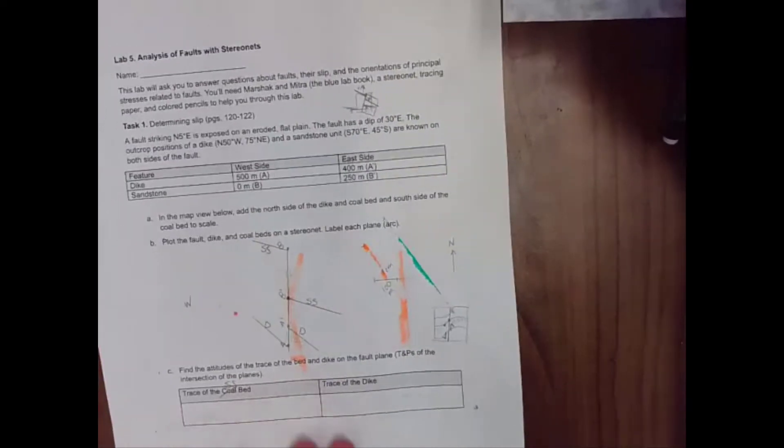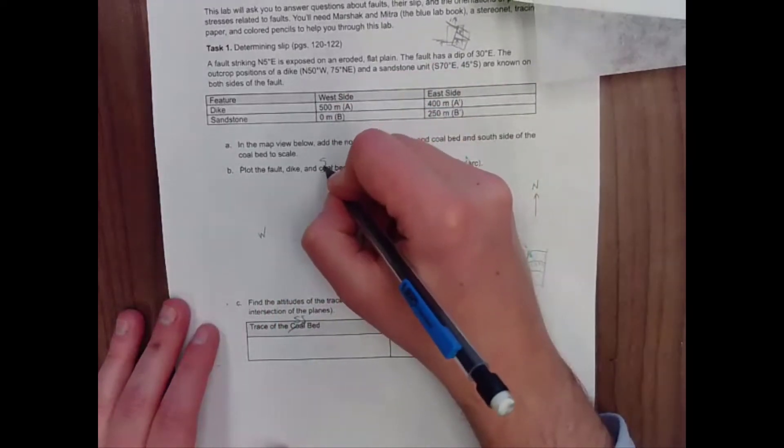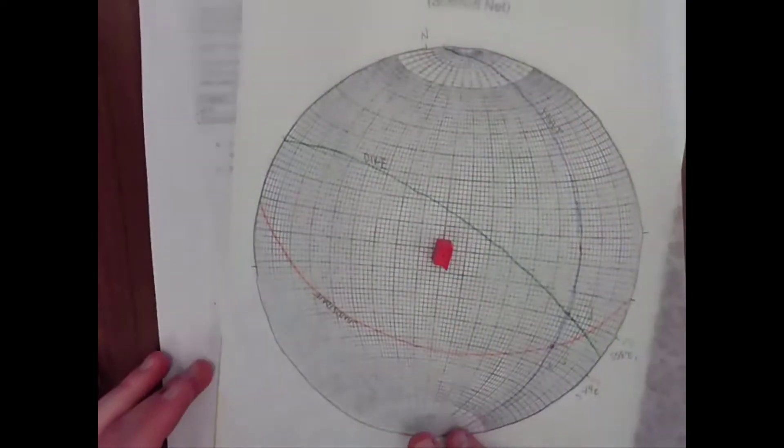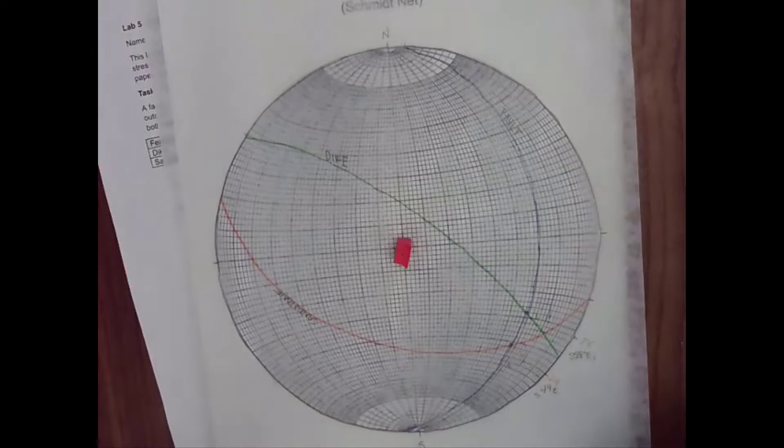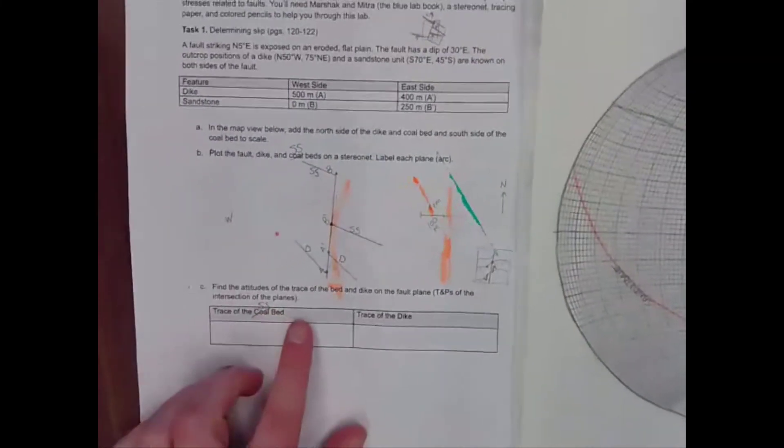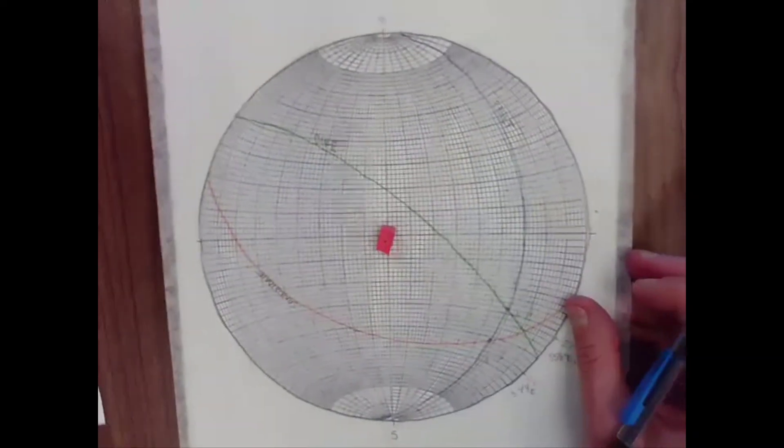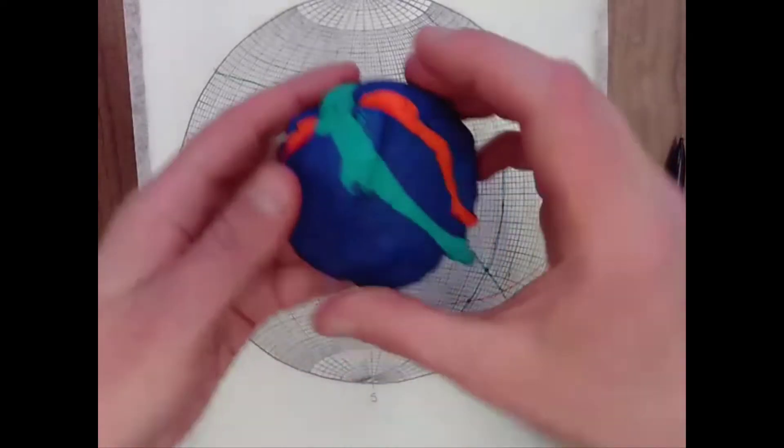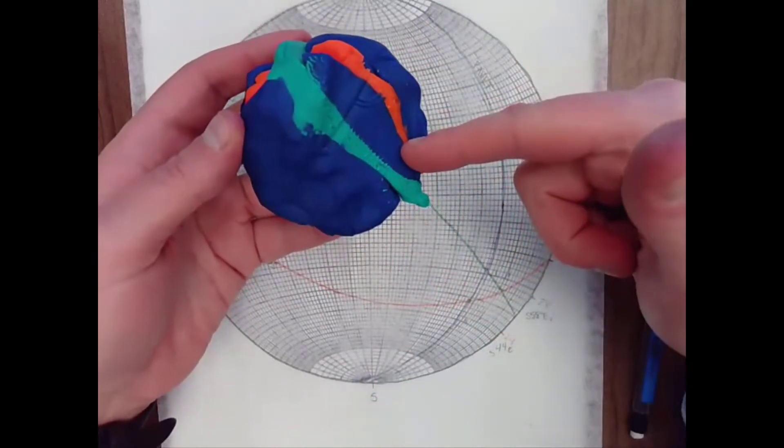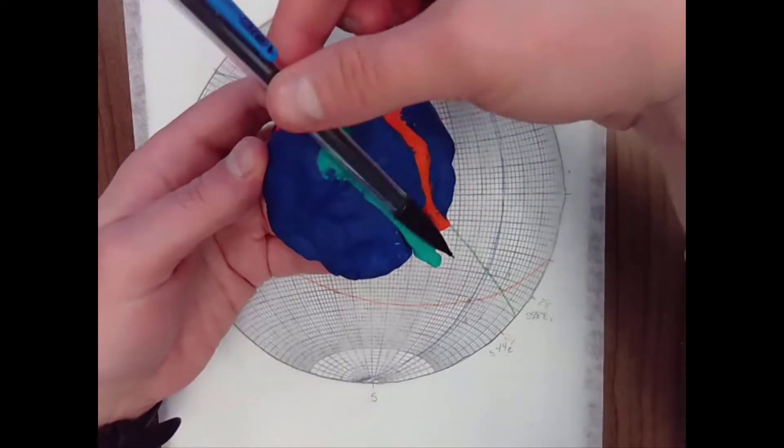To solve this problem on a stereonet, the first thing that you're going to have to do is plot the fault, the dike and the sandstone bed on the stereonet and label each one. I'm going to go ahead and assume that you all know how to plot planes on a stereonet. Then it says find the attitudes of the trace of the bed and the dike on the fault plane. What that means is what is the trend and plunge of those features on the fault plane. We know that the plane comes down to the east. So what are the trends and plunges of the line that represents this line and the one that represents this line, the dike and the sandstone bed.